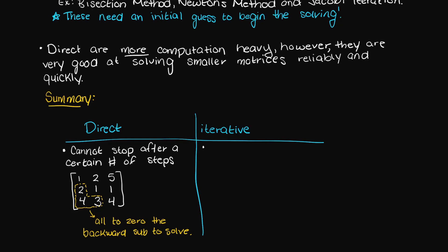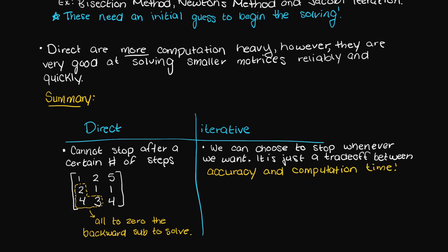However, with iterative numerical methods, you do not have a set number of steps needed. You can stop whenever you want. Just the longer you go, the more accurate your solution will become. You are just trading off computation time versus accuracy.